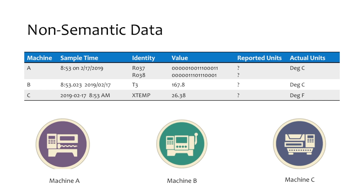Additionally, the requirements to define and transform the data are not a static effort — once you're done, you really are not done. When changes occur like adding, upgrading, or replacing a piece of equipment, or when new data types are added, maintenance must be performed on the data translation tool. This becomes an ongoing maintenance task. The other challenge associated with unstructured data is that the data definition and translation function typically must be replicated for each different client software application that collects the data from the equipment. This provides a third dimension of effort that increases both the time and cost to deploy and maintain data collection systems.